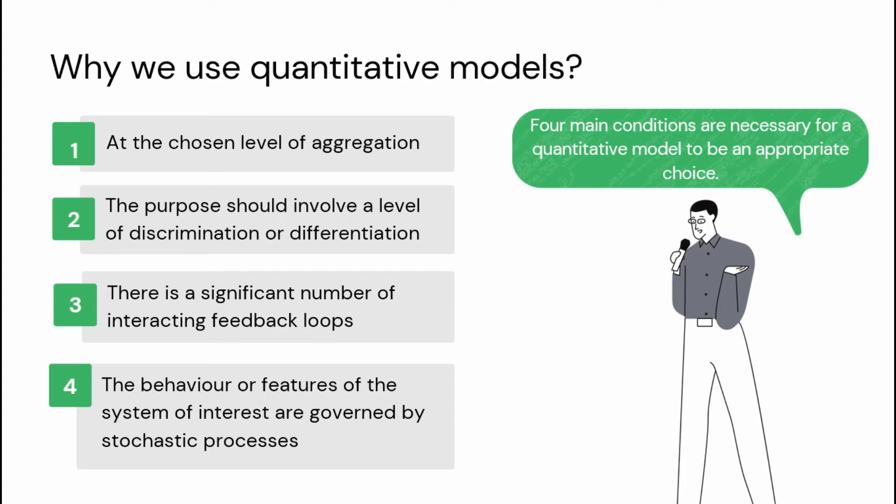Number two, the purpose should involve a level of discrimination or differentiation that can only be achieved by quantitative comparisons. Number three, there is a significant number of interacting feedback loops — you are likely to be forced to use a quantitative model to understand what is going on.